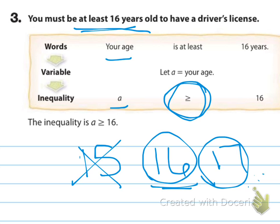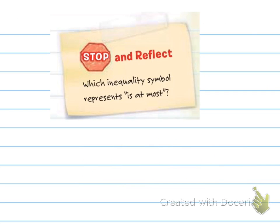A lot of times 'at least' makes people think less than — no. At least means at the very least, the smallest it could be is that number, and all numbers bigger than that. So 'at least' means greater than or equal to.